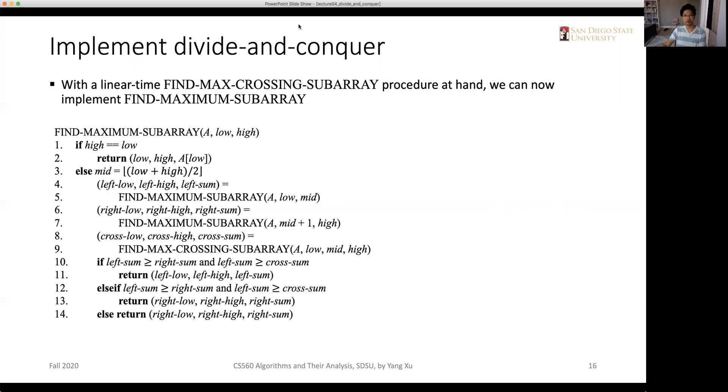So the final implementation looks like this way. We have inputs: input A, the array A, the starting index, end index. And if the high equals low means that there is only one element. And in that case, we just return the indices and the value of it. Because for inputs that has one element, any sub-array itself is the maximum sub-array.